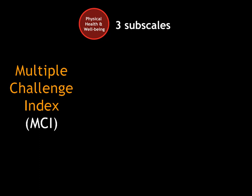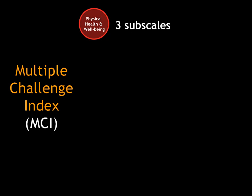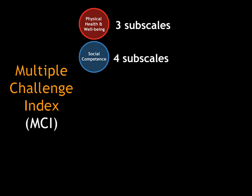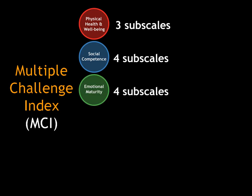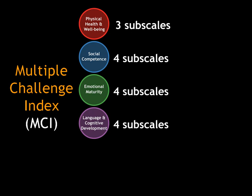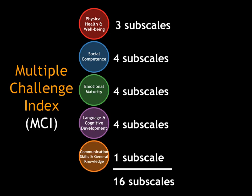It takes advantage of a psychometric property of the EDI, which is that the five broad scales of the EDI are divided into subscales. For instance, the Physical Health and Wellbeing broad scale has three subscales. Social Competence has four subscales. Emotional Maturity has four subscales. Language and Cognitive similarly has four subscales. And finally, Communication Skills and General Knowledge is one broad subscale. Overall, the five broad scales of the EDI break down into 16 subscales.